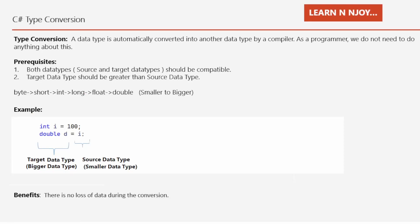Type conversion is the process by which a data type is automatically converted into another data type by the compiler. As a programmer, we don't need to do any special arrangement for implementing it. There are two prerequisites: number one, both source and target data types should be compatible; number two, the target data type should be greater than the source data type. The order from smaller to bigger is: byte, short, int, long, float, double.